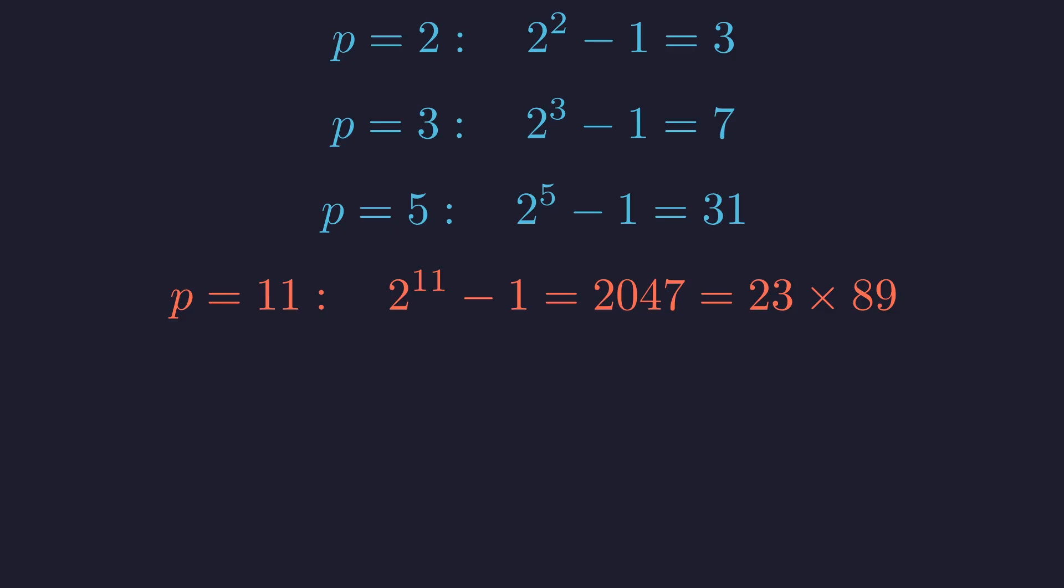For example, p equals 11 gives us 2 to the 11th minus 1 equals 2047, which looks prime at first glance. But it's actually 23 times 89, so clearly things aren't straightforward. Even if p itself is prime, 2 to the p minus 1 might not be.